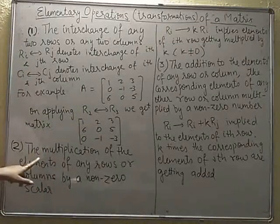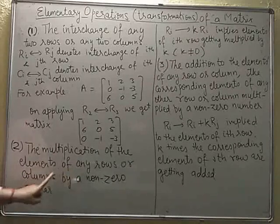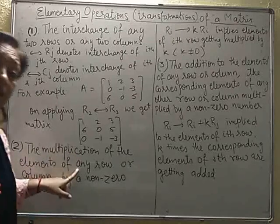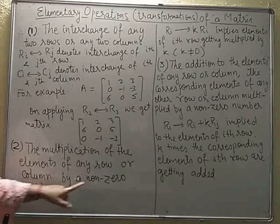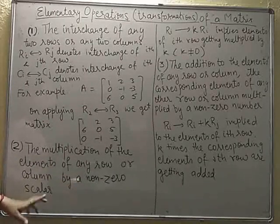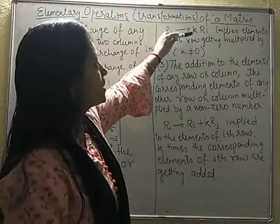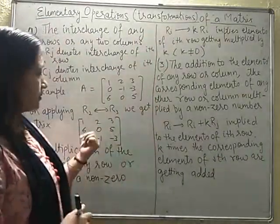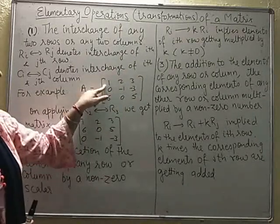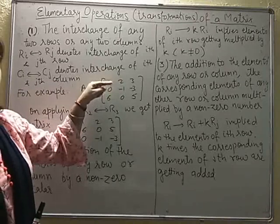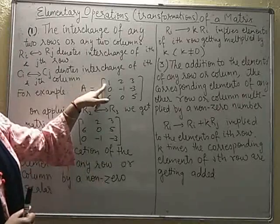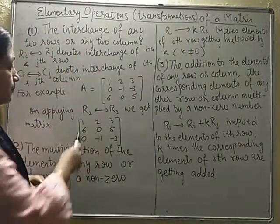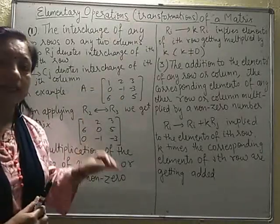The second operation is the multiplication of the elements of any row or column by a non-zero scalar. We are multiplying the elements of any particular row or column by a non-zero number — the number should not be 0. If I use the notation Ri → K·Ri, that means we are multiplying the elements of the Ith row with a non-zero scalar K. For example, if R1 → 2·R1, then only the elements of row 1 get multiplied by the scalar 2.